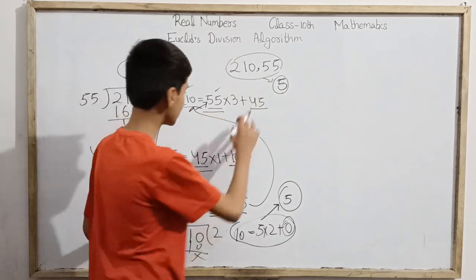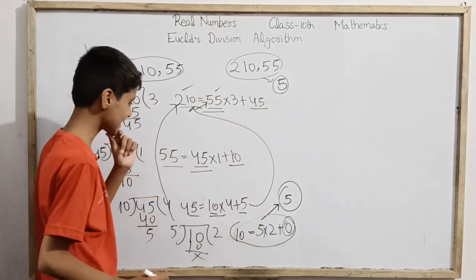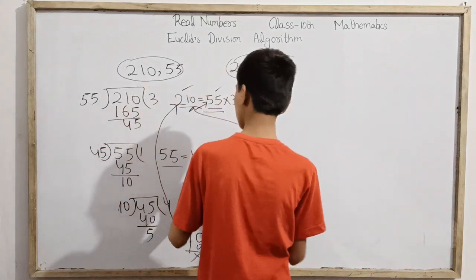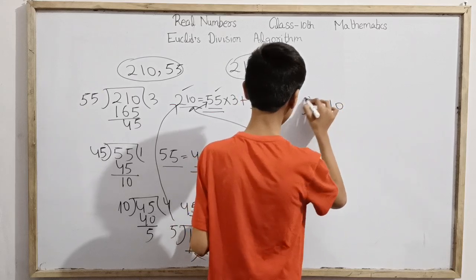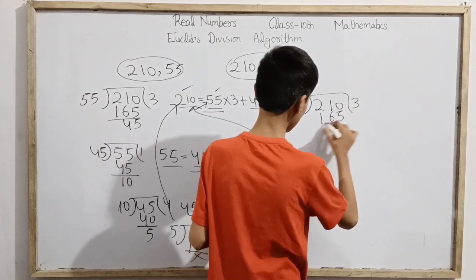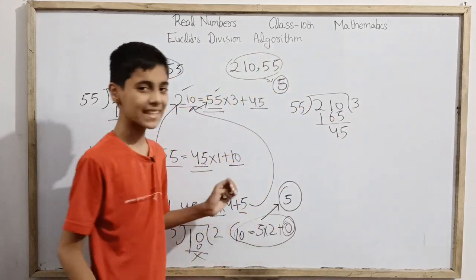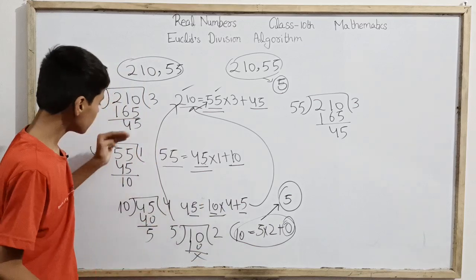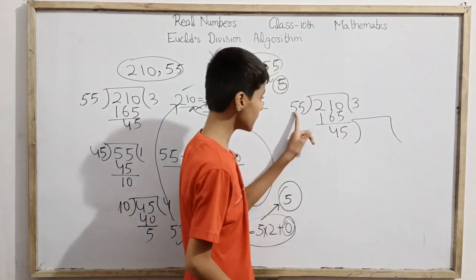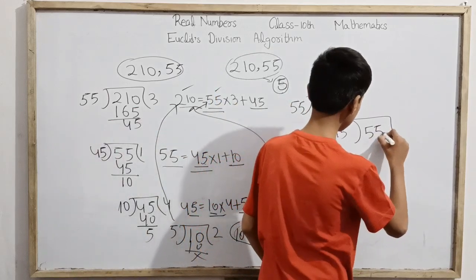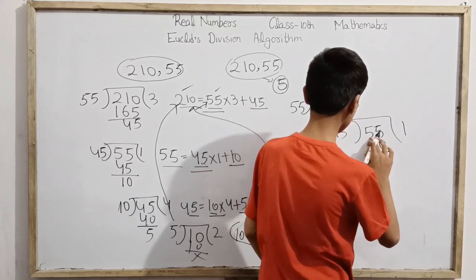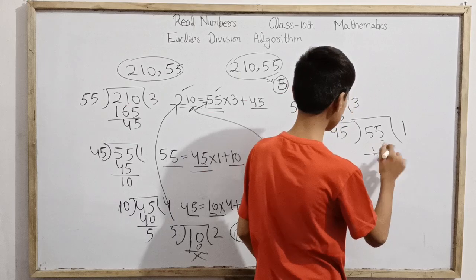This doesn't look so neat. Let me show you how we usually write it. We write 210 divided by 55, which gives 3 with remainder 45. Then 55 divided by 45 goes 1 time leaving 10. Then 45 divided by... here is 45, then 10.